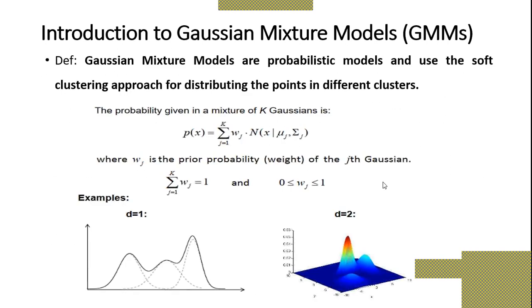What is the definition of a Gaussian Mixture Model? It is defined as: Gaussian Mixture Models are probabilistic models that use a soft clustering approach for distributing the points into different clusters. The probability given a mixture of K Gaussians is formalized as P(x) equals summation from j equals 1 to K of wj times N(x; mu_j, sigma_j), where wj is the prior probability, that is the weight of the j-th Gaussian.